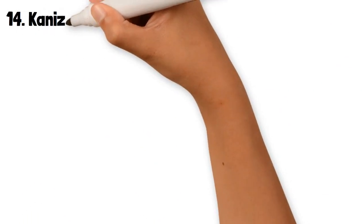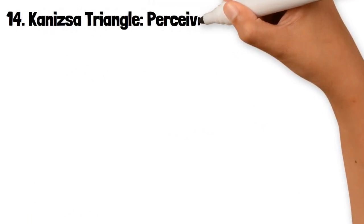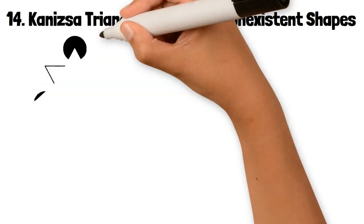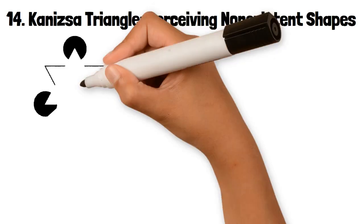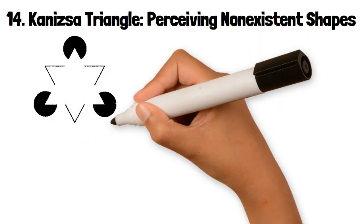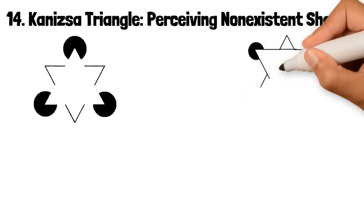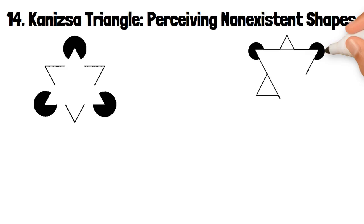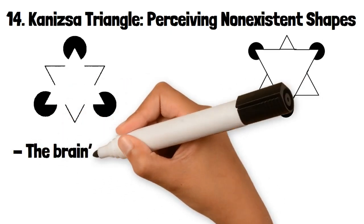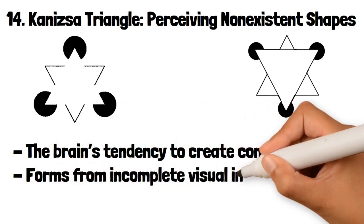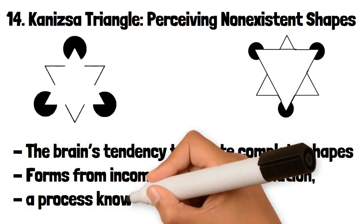14. Kanizsa Triangle: Perceiving Non-Existent Shapes. The Kanizsa Triangle is an optical illusion where the brain perceives a white equilateral triangle, even though no triangle is actually drawn. This illusion is created by strategically placing three Pac-Man shapes and three angles in such a way that the brain fills in the gaps to create the illusion of a triangle. This illusion highlights the brain's tendency to create complete shapes and forms from incomplete visual information, a process known as closure.